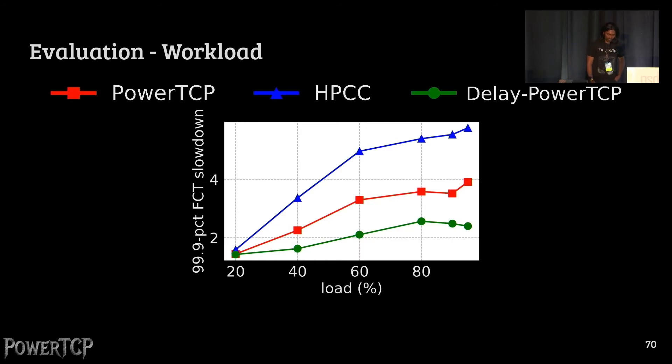Finally, we also evaluated using more realistic workloads. Here, we launched web search workload and varied the load on the network on the x-axis, and we measured 99.9 percentile flow completion times on the y-axis, only for short flows. We observe, as the load increases, PowerTCP indeed improves upon HPCC by up to 33 percent. Interestingly, the approximated version, delay PowerTCP, performs slightly better than PowerTCP here.